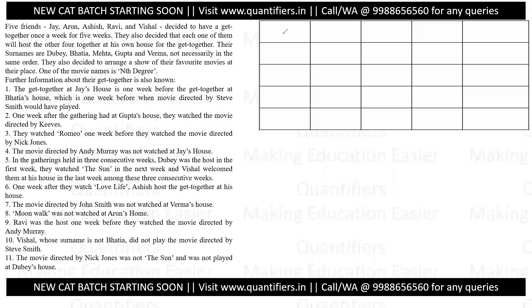So we have weeks one through five. The get-together at Jay's house is one week before the get-together at Bhatia's house.